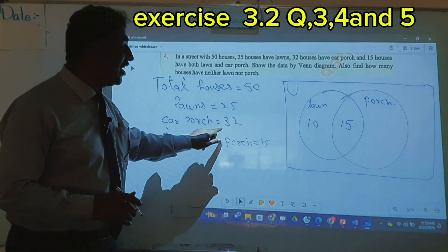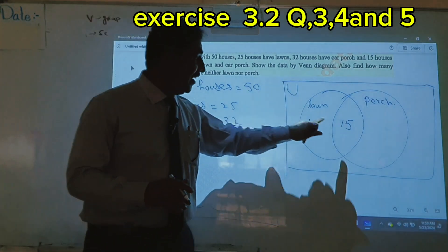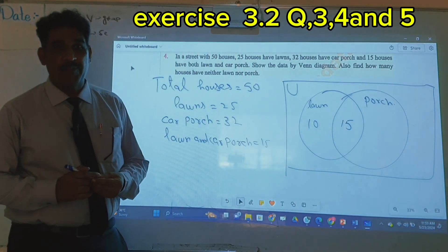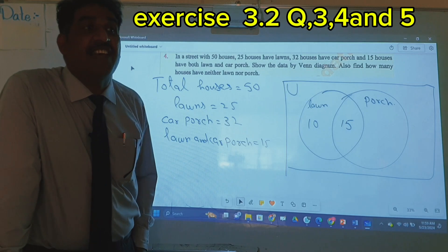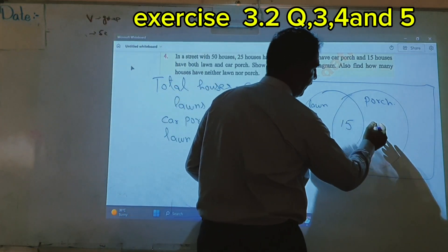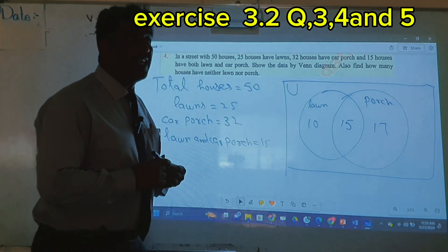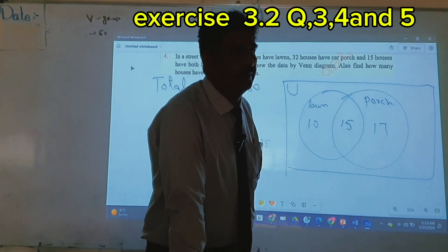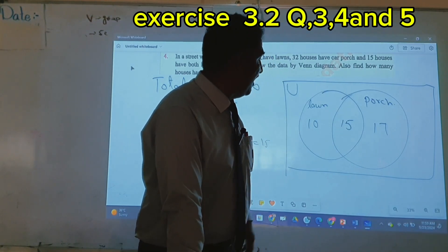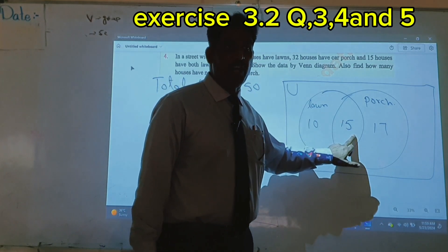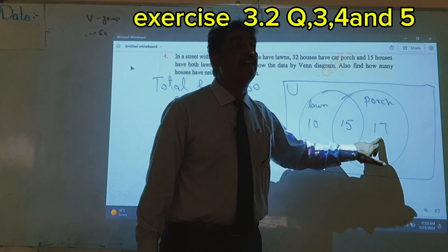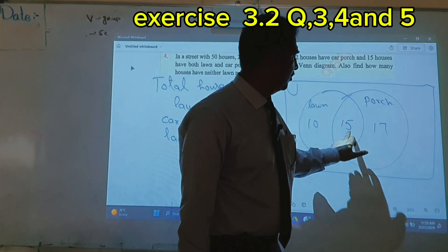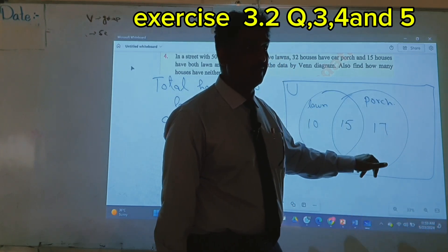Now for car porch: how many houses? 32. We already wrote 15 in the center, so how many only car porch? 17. For lawn: 25 houses. Checking totals: 25 plus 17 equals 42.